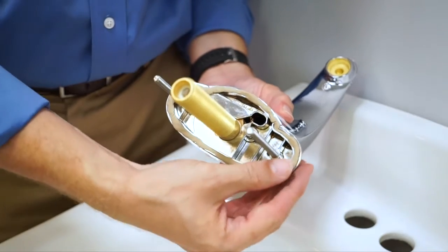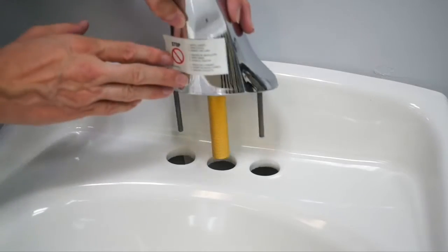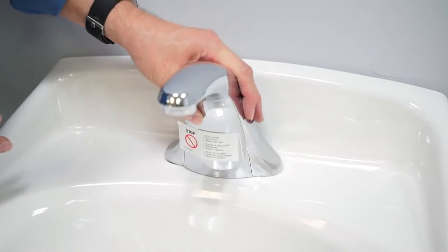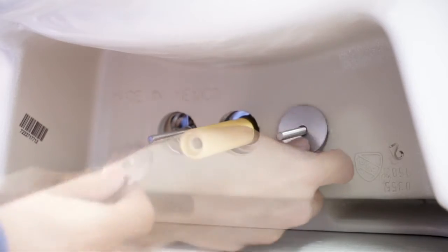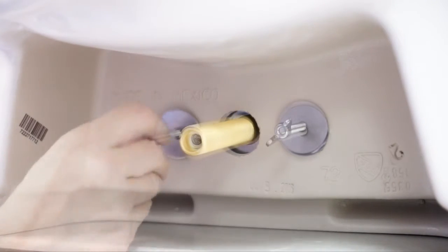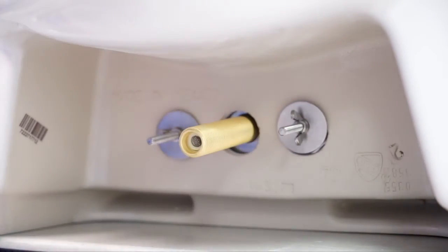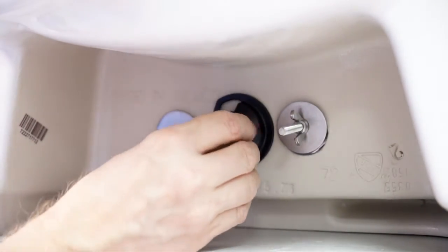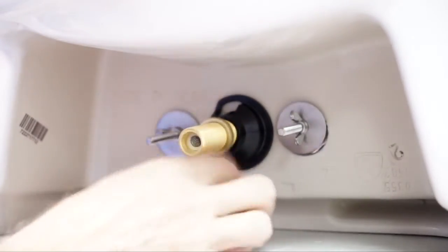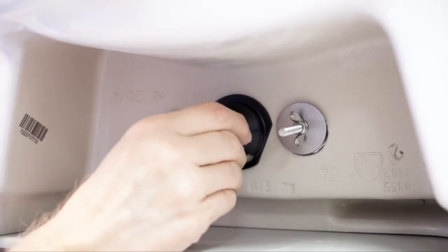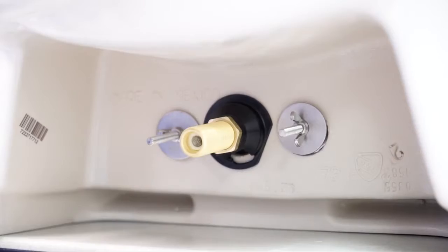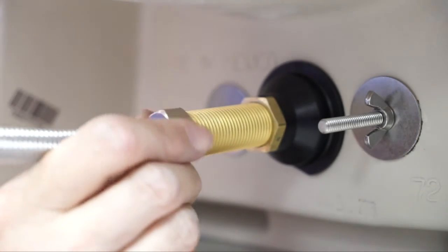Place the faucet on the sink, attach the supply line, and turn on the water.